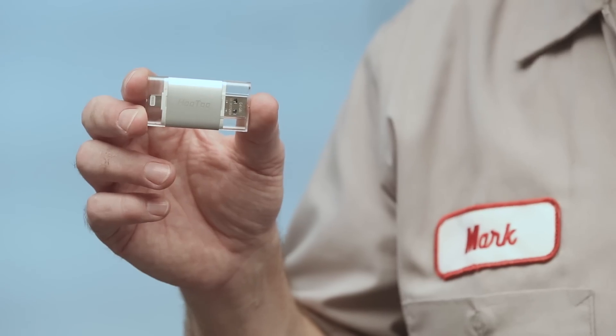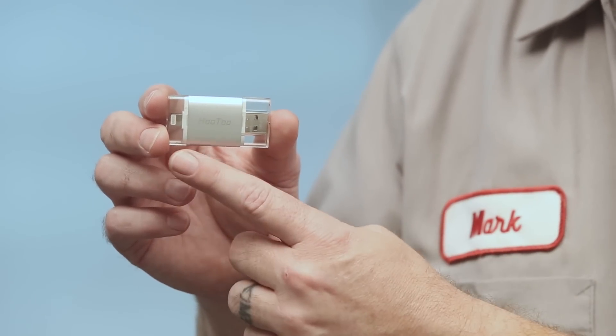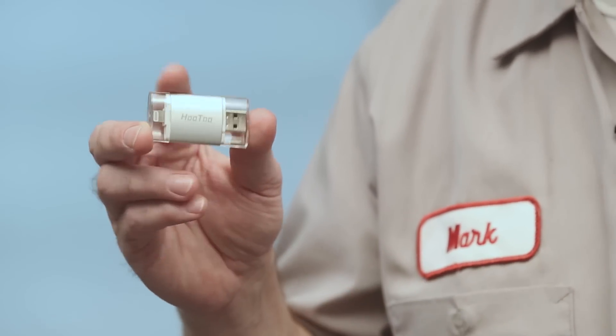This USB stick has a USB on one end and a little lightning cable on the other, so I can plug it right into my phone. It has a little app that allows me to transfer files from my phone onto this little USB stick. Then I take the USB stick, plug it right into the control and transfer my files. Really simple.